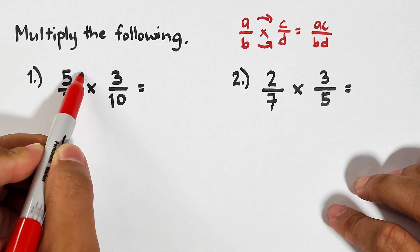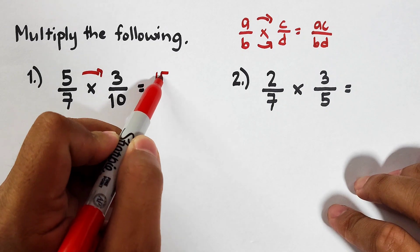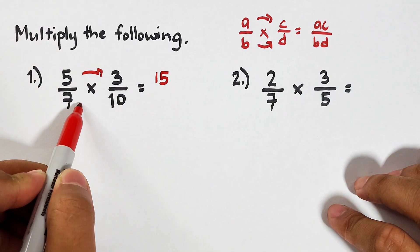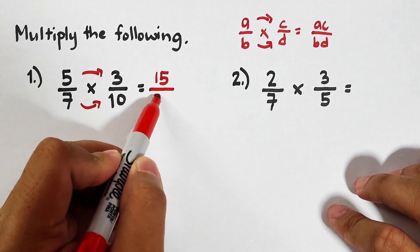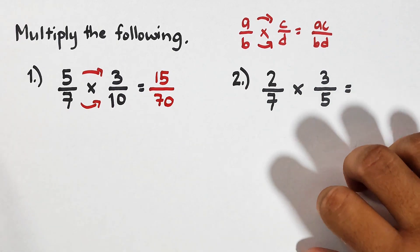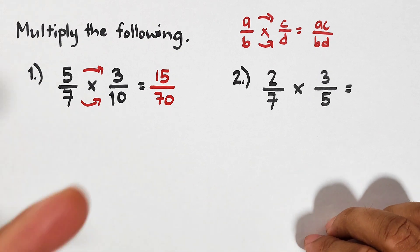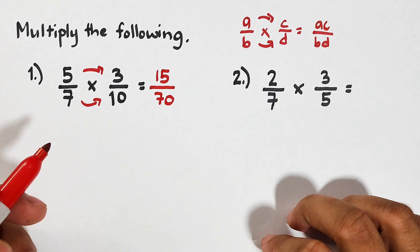5 times 3, that is equal to 15 over 7 times 10, that is equal to 70. Now in operation of fractions, what you need to consider is after applying or performing the operation like multiplication, you need to think if we can still simplify or express our final answer in lowest terms. This 15 over 70 can be simplified.